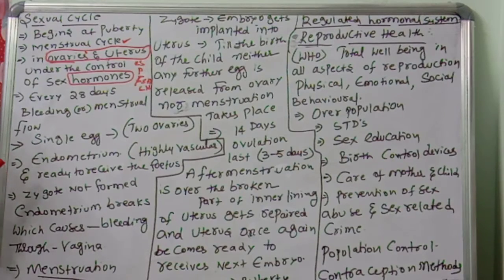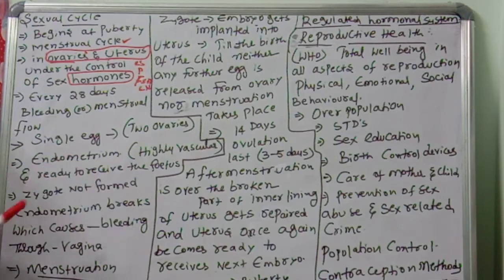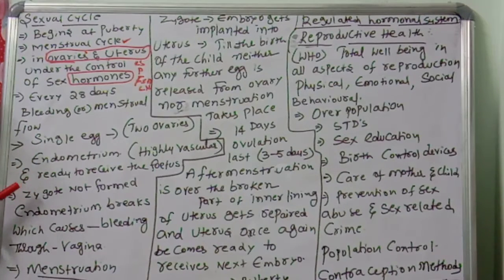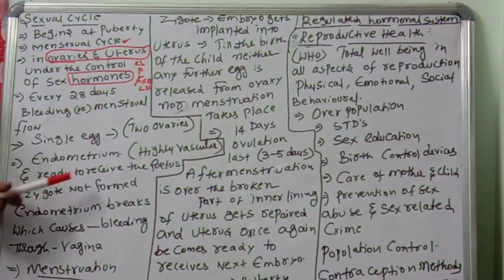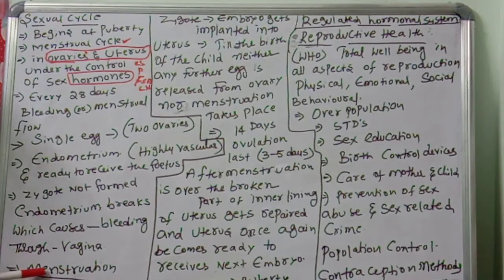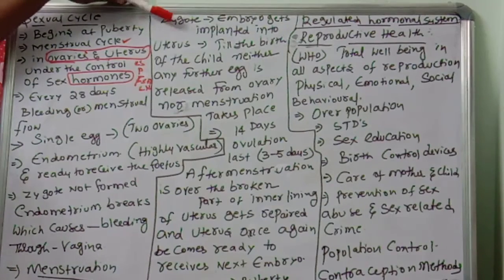The inner wall of the uterus is called the endometrium. There is also the myometrium and perimetrium. The endometrium is highly vascular — richly connected with blood vessels — and is ready to receive the fetus. If the zygote is not formed, the highly vasculated endometrium breaks down, causing bleeding through the vagina. This process is called menstruation.